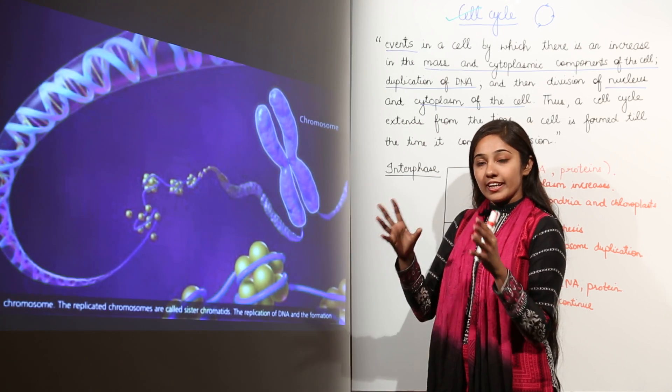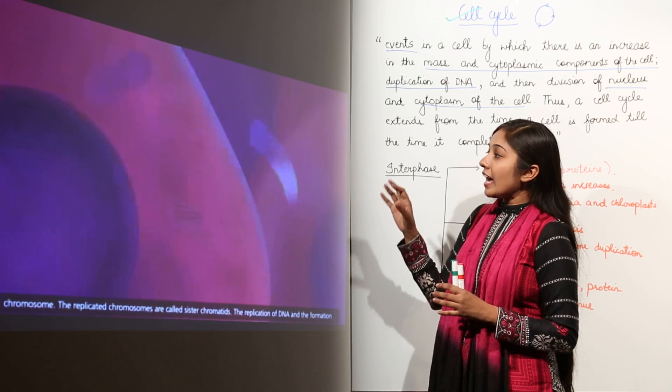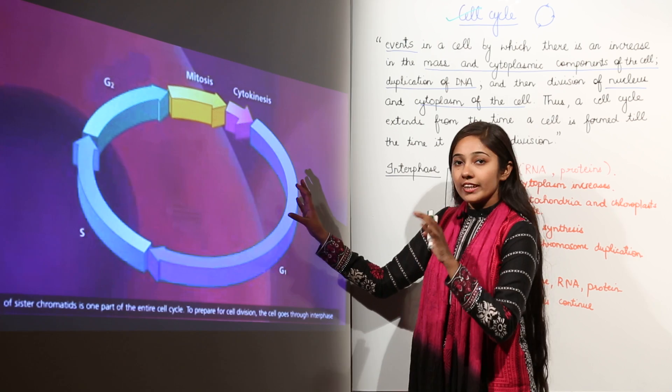This chromosome replicates, duplicates, and then cell division process starts. So we have a cell cycle that is a continuous process in which we have interphase which is the longest phase.